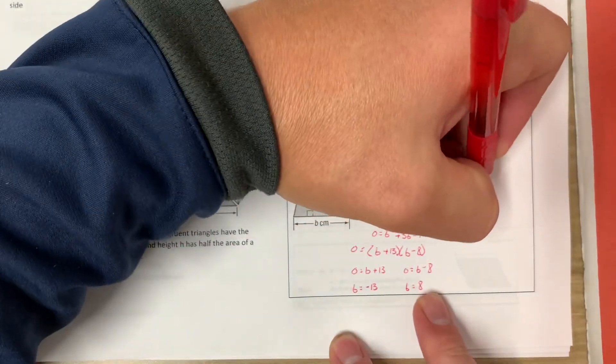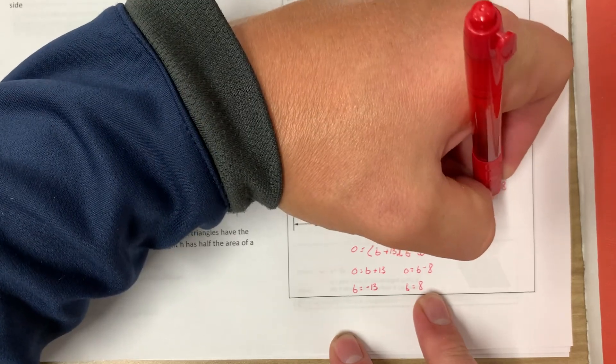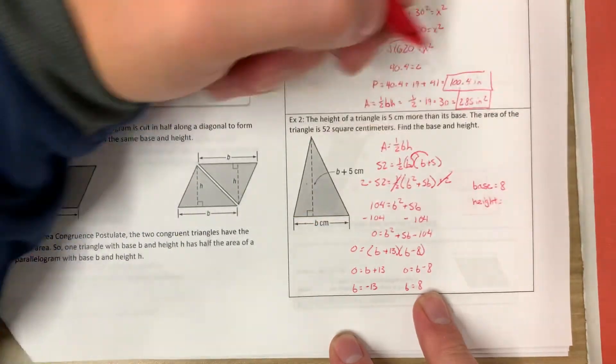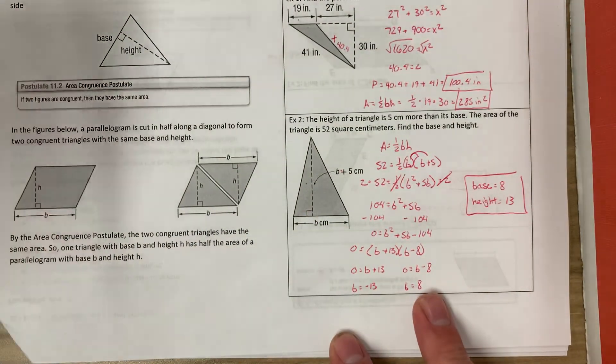So our base will equal 8 and our height will equal 8 plus 5, which is 13. And that's all for 11-1.